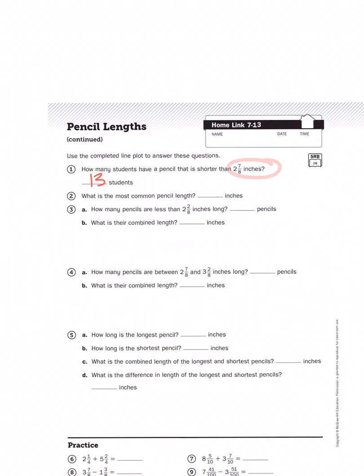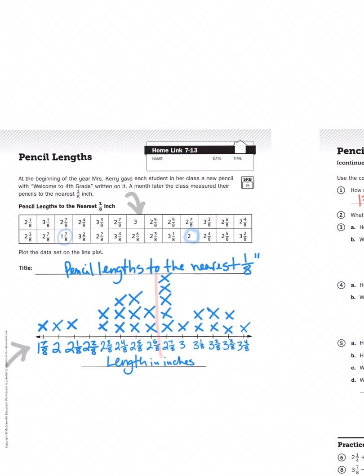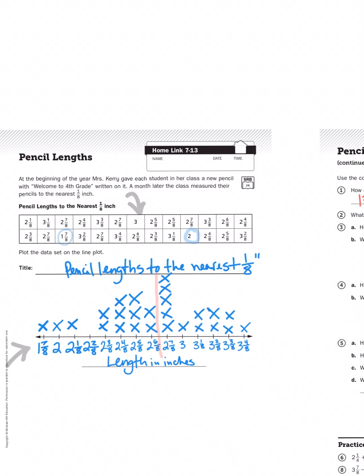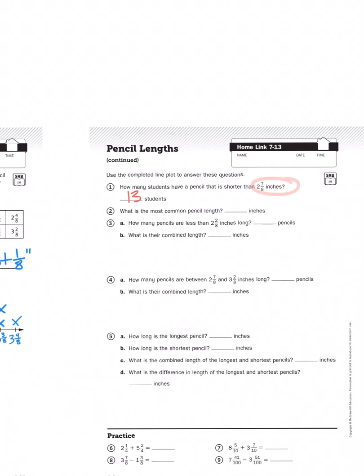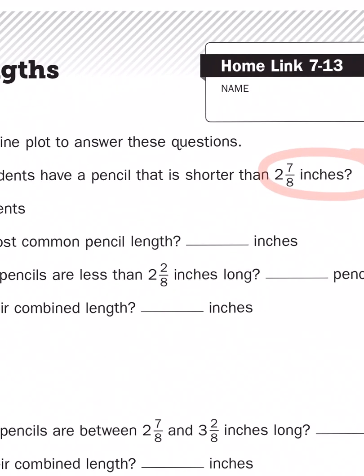Problem number two asks us what's the most common pencil length. And again, I'm going to consult my line plot graph, and I'm going to look for the column that is the tallest or has the most x's. And as you can see, it's 5 x's. That's under 2 and 7/8ths. So here, instead of writing students, I would write a length, which is 2 and 7/8ths.